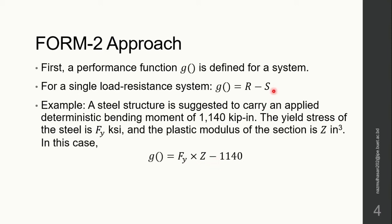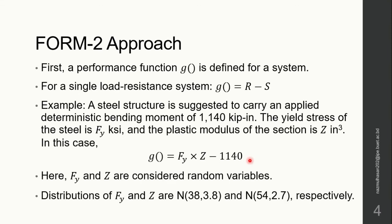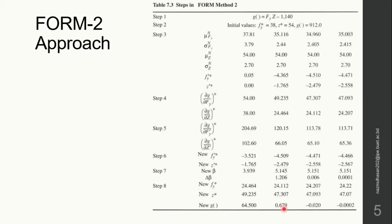Here Fy and Z are considered to be random variables and they are assumed to follow the normal distribution with the given parameters. Now what the FORM method does: